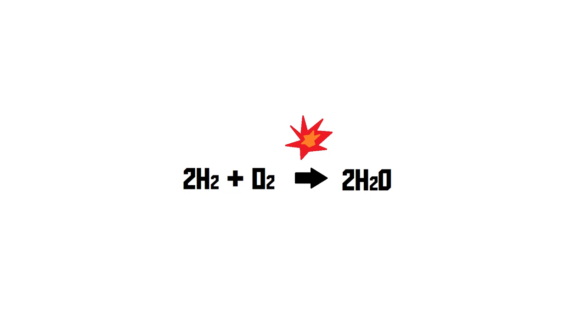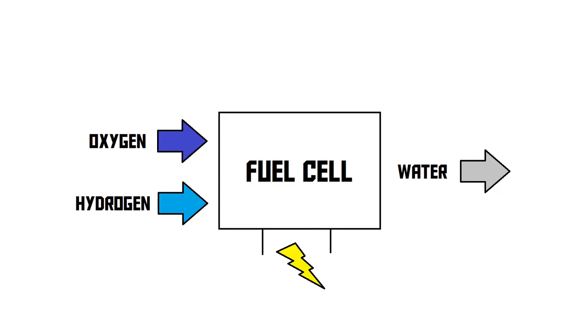Now, of course, uncontrolled explosions are great fun, but how do we properly use hydrogen as a fuel to power machines and vehicles, for example? Well, in order to do that, we use a device called a fuel cell. A hydrogen fuel cell is a device that takes hydrogen and oxygen and uses those to create electricity. But how exactly does a fuel cell work? Let's find out.